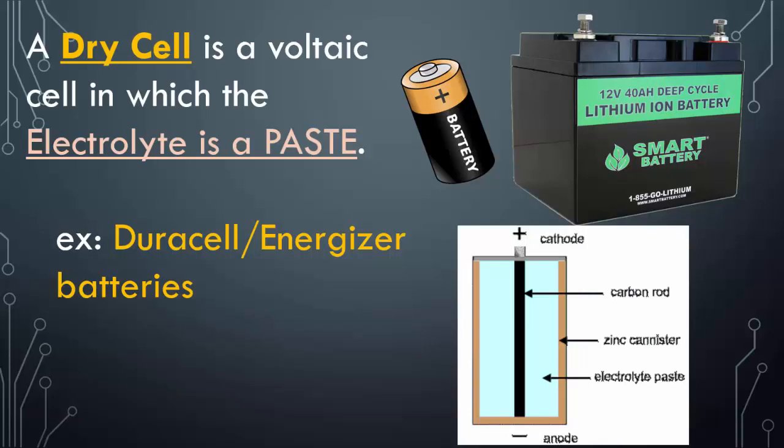A dry cell is a voltaic cell in which the electrolyte is a paste — like Duracell batteries. Looking at the picture, there is a carbon rod in the center, surrounded by an electrolytic paste, with a zinc canister around it. That electrolytic paste serves as the salt bridge, allowing the flow of electrons and current between the zinc and the carbon.